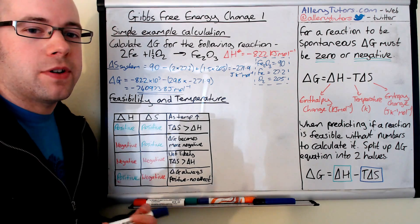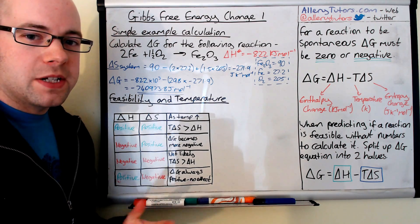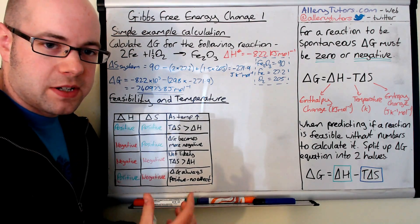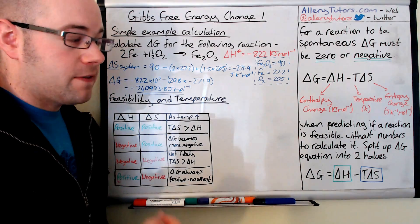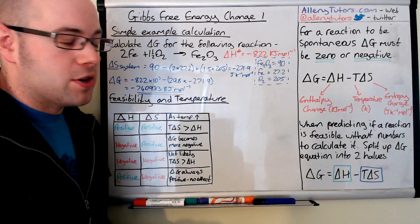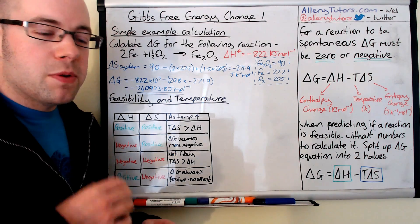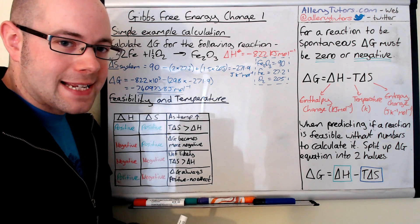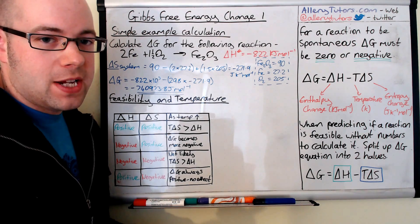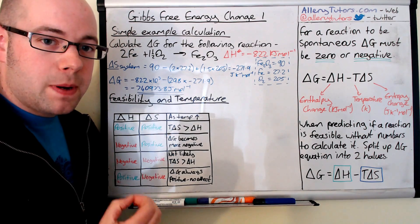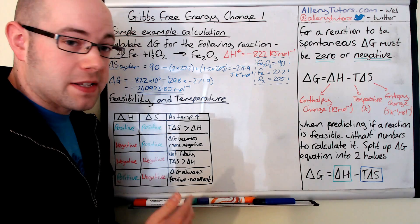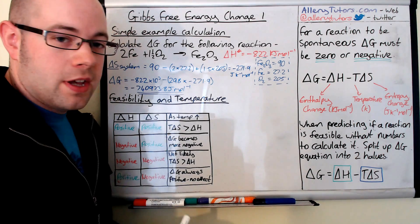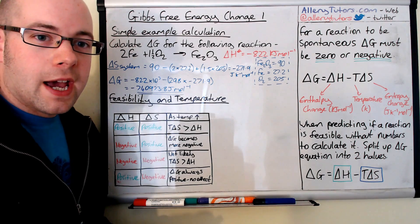Now suppose we don't have any numbers and want to comment on feasibility depending on changing temperature — a qualitative description. We split the delta G equation into two halves: the green delta H section and the blue T delta S section. To make delta G zero or negative, meaning the reaction is feasible, the T delta S part must be bigger than the delta H part. If T delta S can never be bigger than delta H, the reaction will never be feasible.